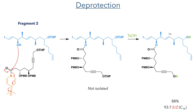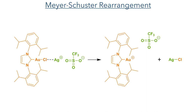This produced the product in an 88% yield with a 93:7 E/Z ratio at C16, as Fragment 2 was not enantiopure. These isomers could be separated, however, using column chromatography. With this in hand, they then started a tandem reaction sequence which began with a Meyer-Schuster rearrangement.